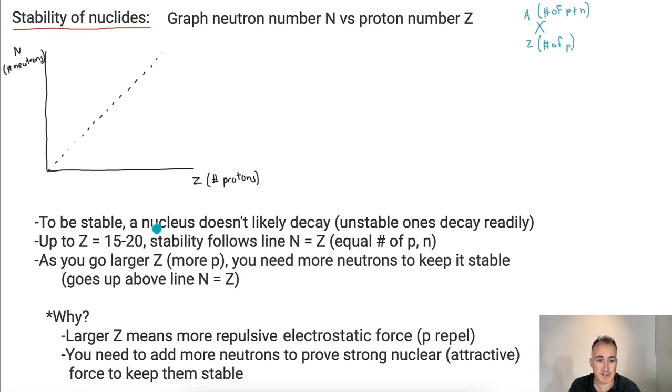Well, for something to be stable, a nucleus doesn't likely decay. That's what I mean by stable. Unstable ones, they'll decay on their own. If it's unstable, just let it be, it'll decay to something else. If it's stable, it doesn't want to do that easily. So up to around Z equals 15 to 20. So somewhere around 15 to 20. So that means the first, so up from hydrogen, for example, all the way up to about the 20th element or so. If we make a line like this right here, it roughly follows this line right here. In other words, this is this line of stability.